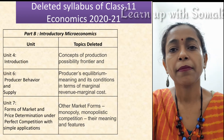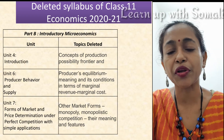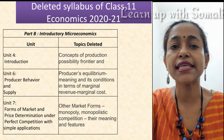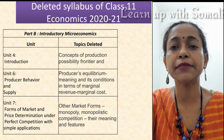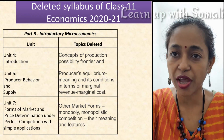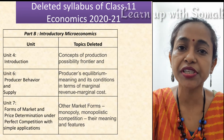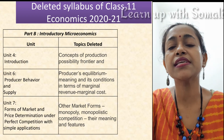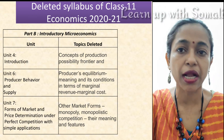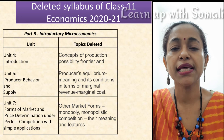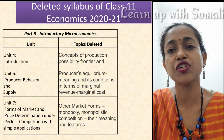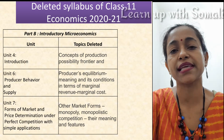In Unit 6 — Producer Behavior and Supply — the producer's equilibrium, its meaning and conditions in terms of marginal revenue and marginal cost, this entire topic has been deleted. Coming to the concluding part, Unit 7 — Forms of Market and Price Determination under Perfect Competition with Simple Applications — only perfect competition has been retained. All other market forms, that is Monopoly and Monopolistic Competition, their meaning and features, have been entirely deleted.